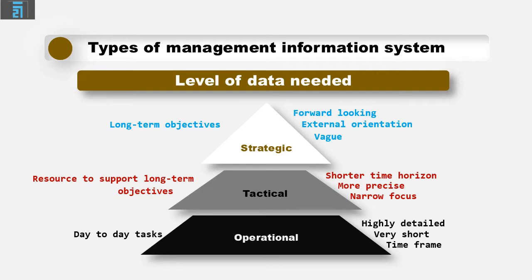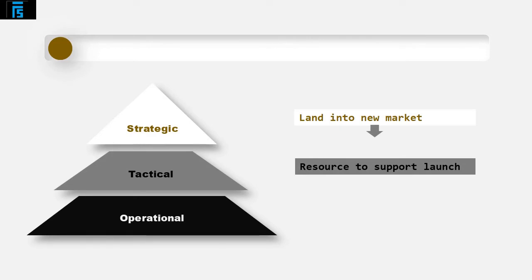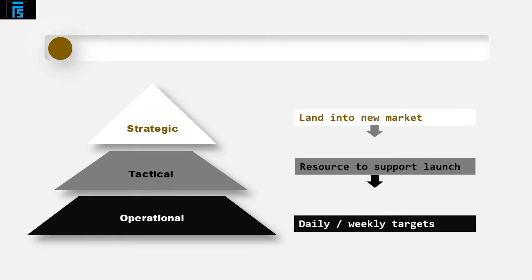It is important to recognise the link between the tiers in the hierarchy. For example, the board of directors of a company may decide to launch a new market with the aim of taking 5% of the total market within three years — a strategic decision. Senior management would then be required to plan the necessary resource to support this, e.g. man hours, equipment, advertising, sales promotion, etc. These would be tactical decisions. And then finally, lower management may set weekly targets for production and sales staff, ensuring quality of product and timely delivery to customers.